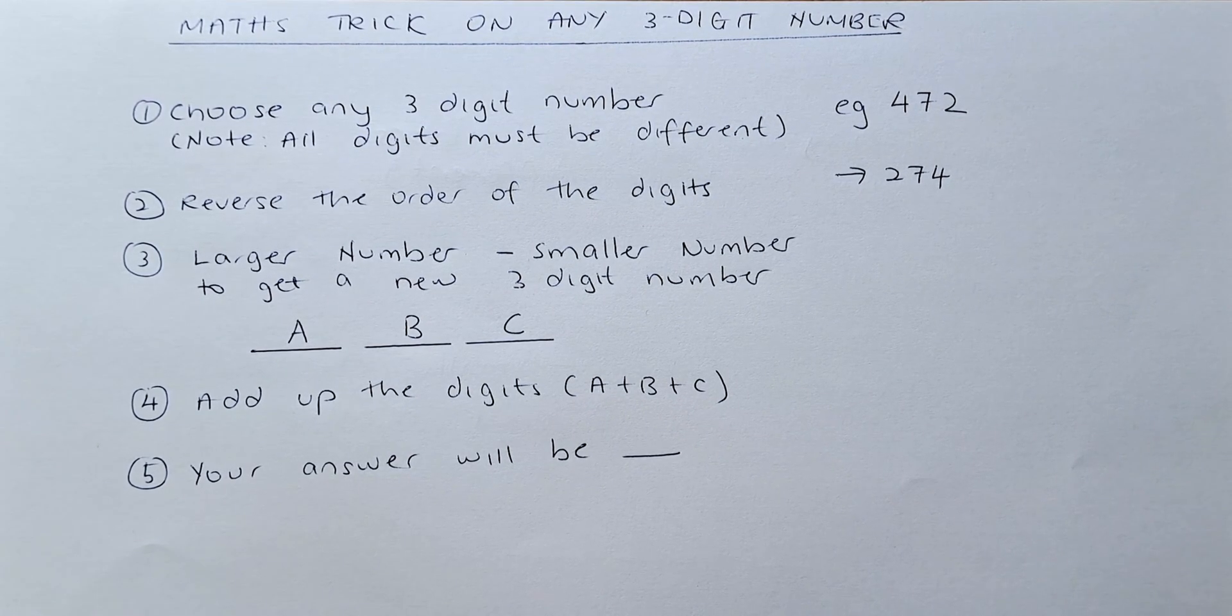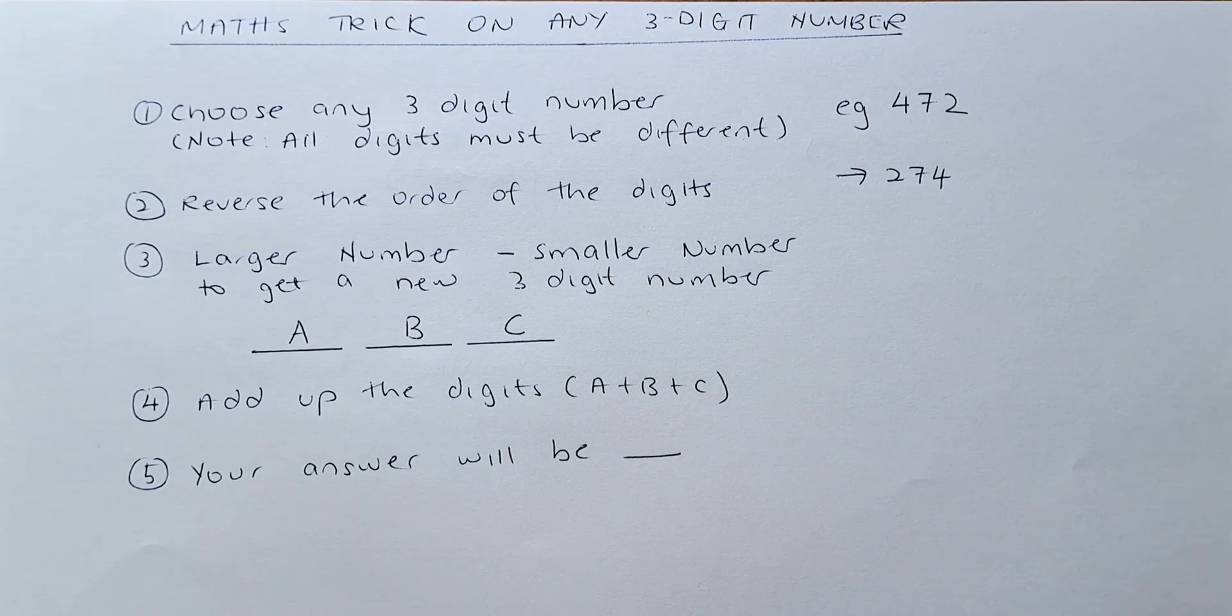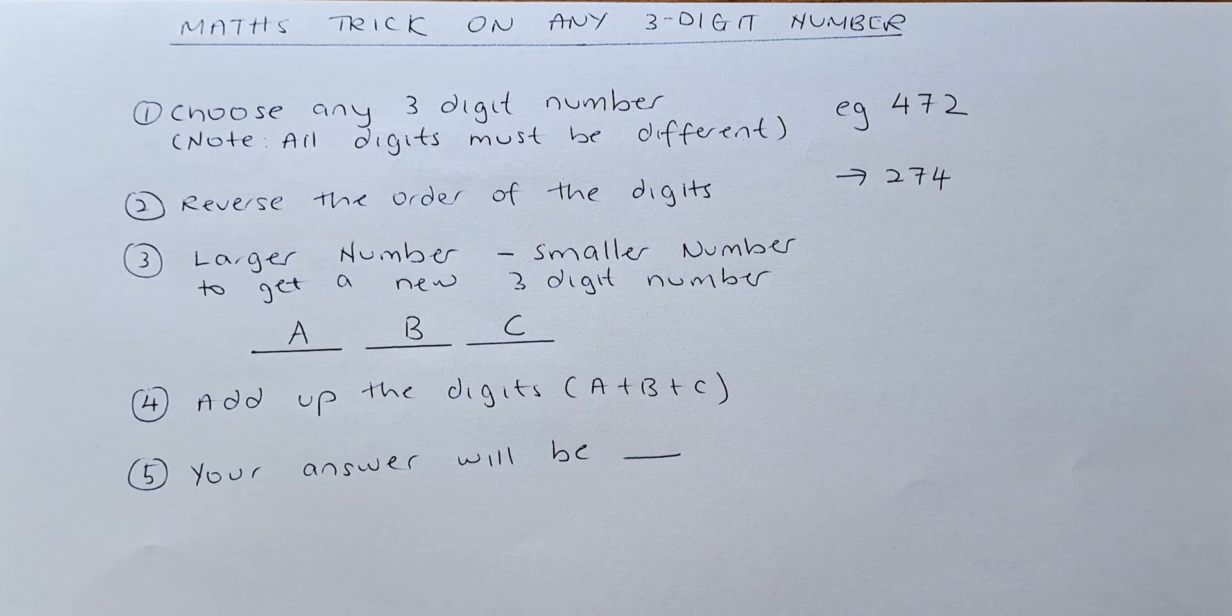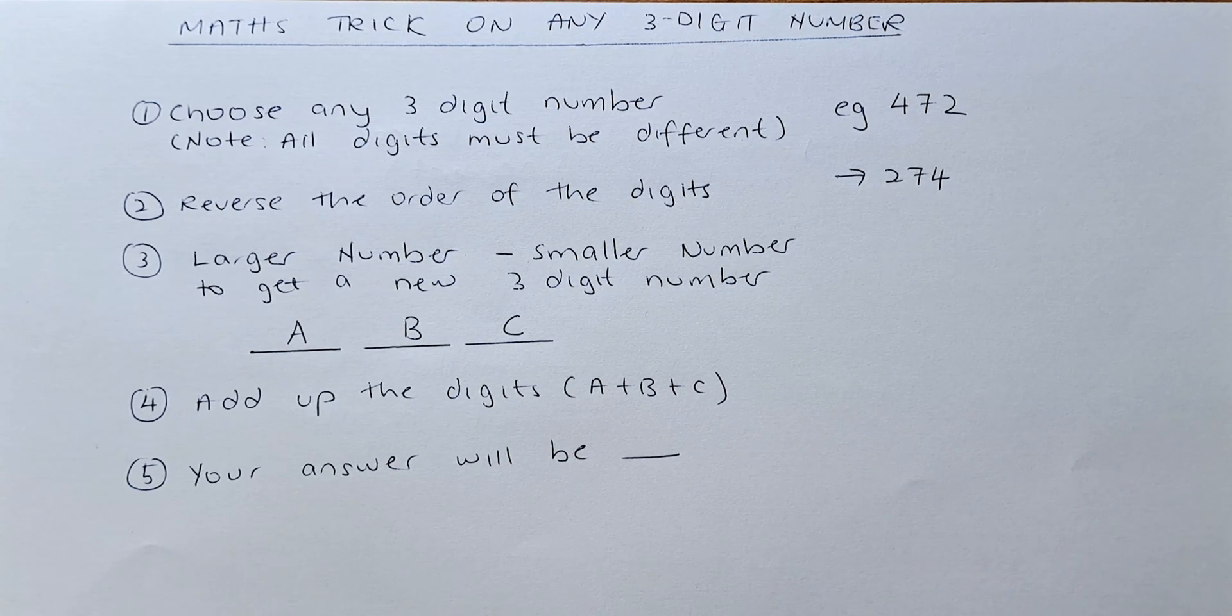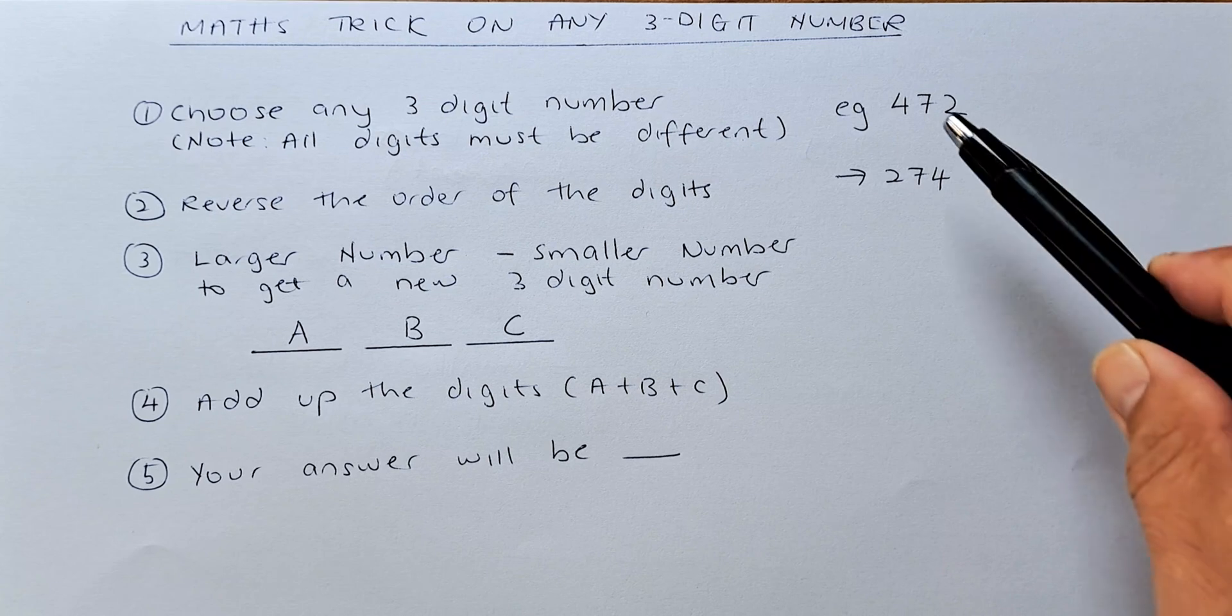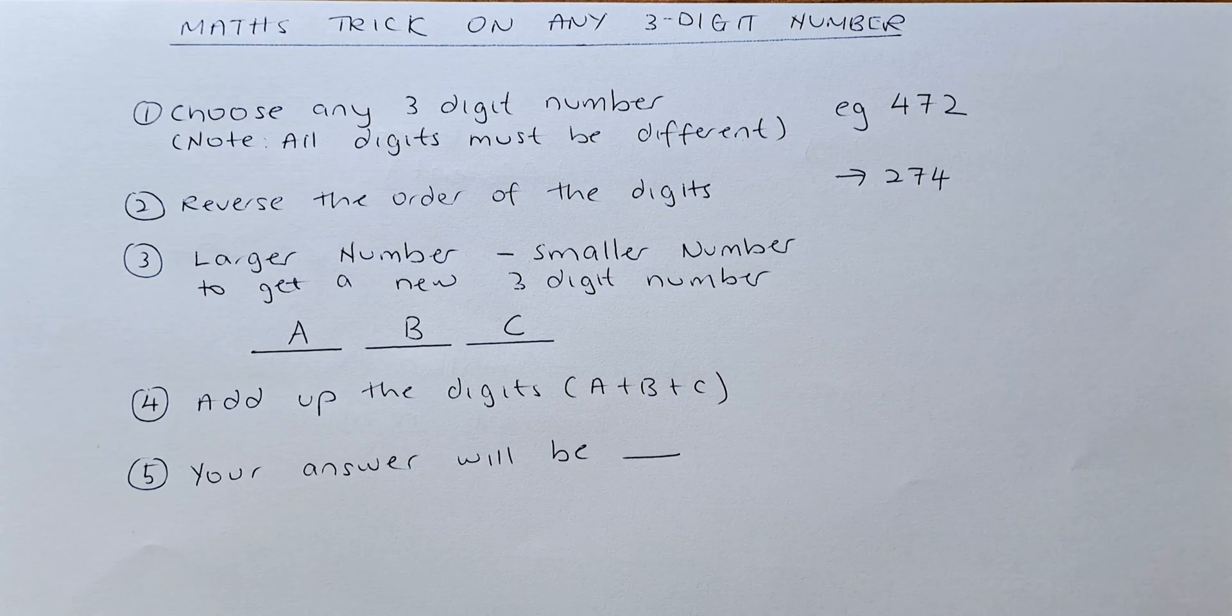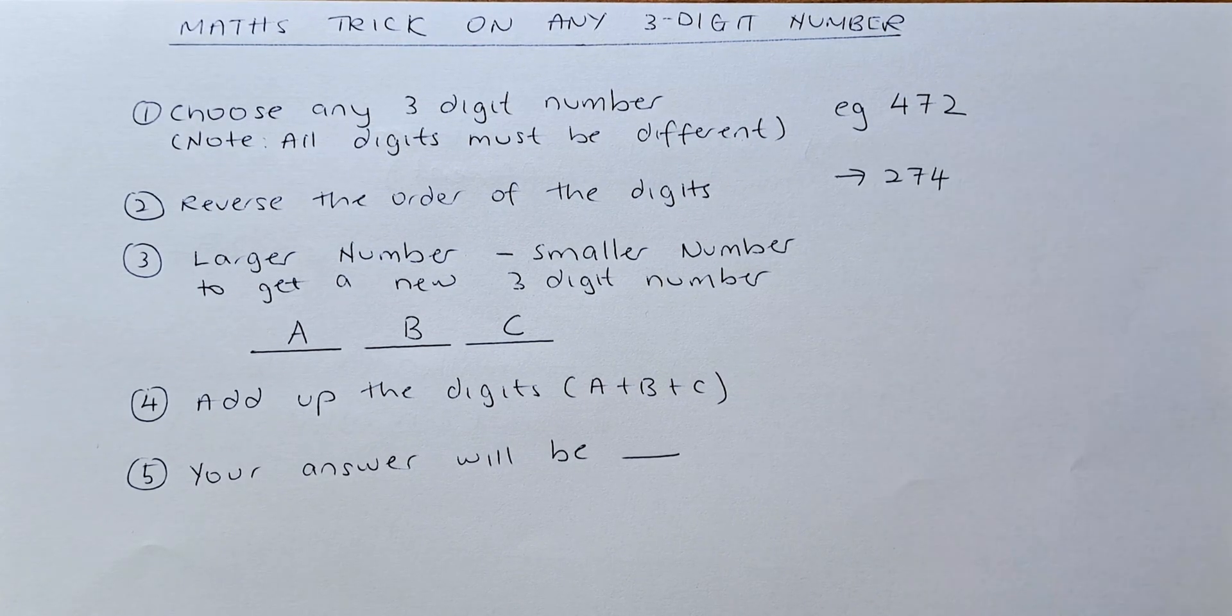So let's go. First, you are going to choose any 3-digit number. And you must note that all the 3 digits have to be different. For example, if you choose the number 472, that is possible because all the 3 digits are different.